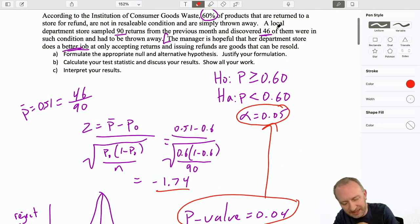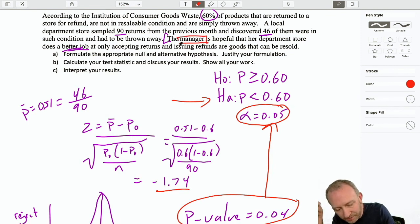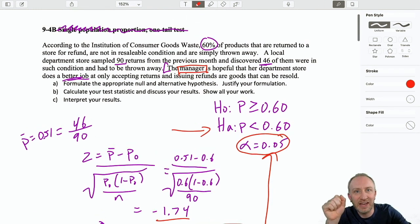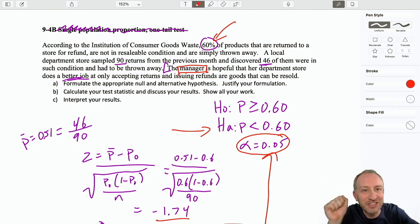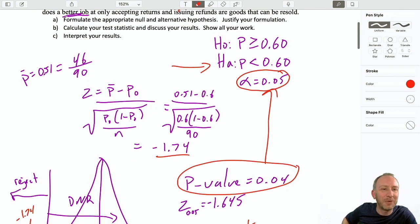My evidence here does support the alternative hypothesis. I have sufficient evidence to say, Mr. and Mrs. Manager, your store is doing just fine. We do have evidence to show that the proportion of returns that your department is throwing away is, in fact, less than the 60% reported by the institution of consumer goods waste. Good. And that's all there is to it. Boy, we're getting through these fast now. Hopefully, that all makes sense. I hope it's helpful. I hope it's not too fast. Thanks for watching, everybody. Bye-bye.